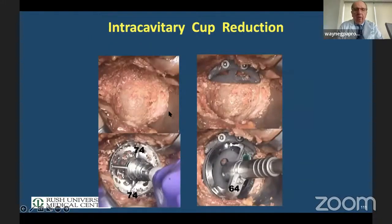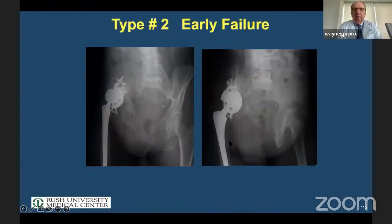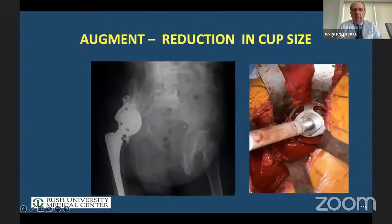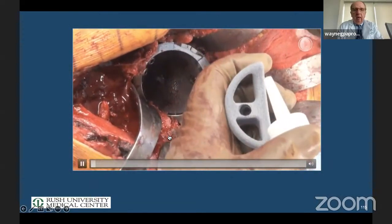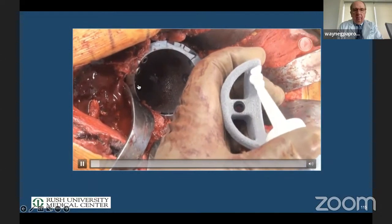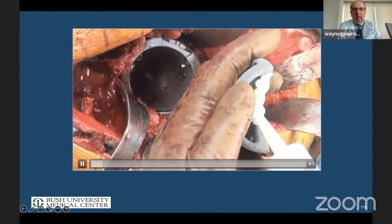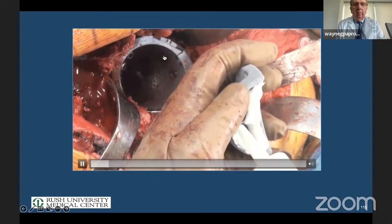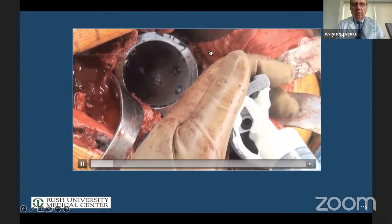Let's show a case: a discontinuity that was missed. You can see how large this defect is, but there's a posterior inferior wall. So we've brought the cup down, get some contact, cup is in place, a couple screws here. There's a superior wall which we'll see in a minute. We're going to drive in this augment — this is a distraction technique where we have the cup stabilized and now drive this augment in as another method of performing distraction.